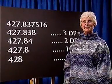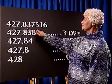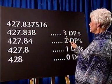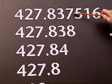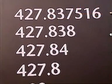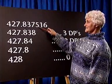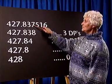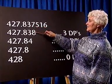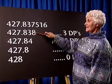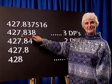In this example, we will approximate a number to a certain number of decimal places. Suppose we want to approximate to three decimal places. We count from the decimal point three places to the right and discard the rest of the digits. If the first digit to be discarded is five or more, we round up the previous digit by adding one. Seven becomes eight, so the answer to three decimal places is 427.838.